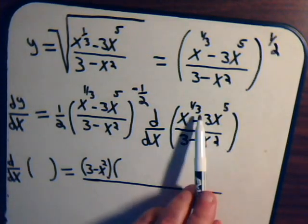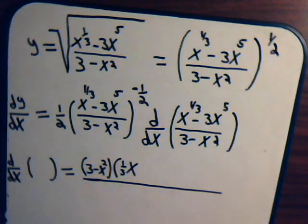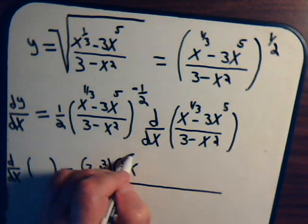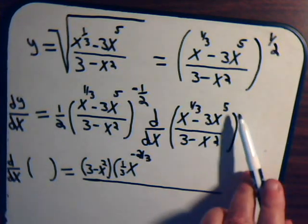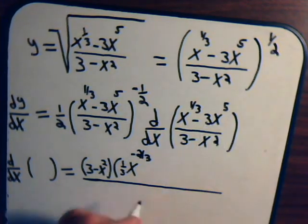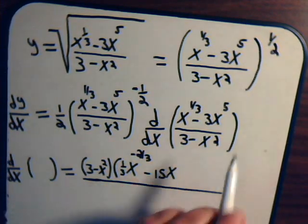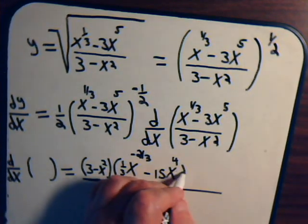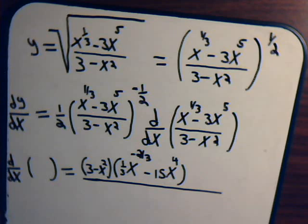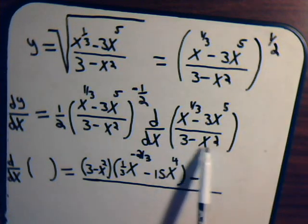Taking the derivative of the numerator, we'll have 1/3 times x to the 1/3rd minus 1, that's minus 2/3rds. Then taking the 5 down times negative 3, that's minus 15, and the new exponent is 5 minus 1, which is 4.